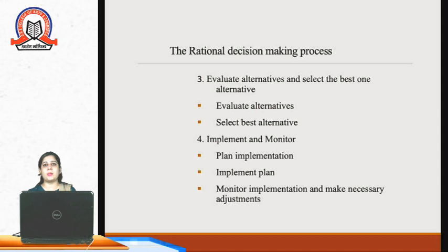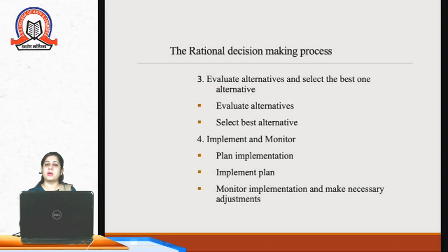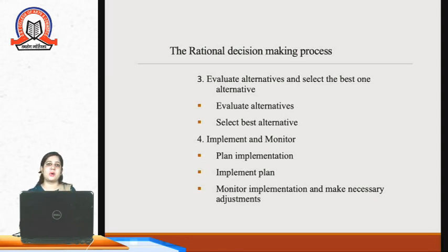The next step is evaluating those alternatives based on statistical or mathematical models and methods, arriving at the best alternative that fits the organizational profit margin. This evaluation is based on PESTEL analysis — political, economical, social, technological, and legal factors — as well as SWOT analysis: strengths, weaknesses, opportunities, and threats. After all these analyses, we select the best alternative to achieve the organization's goals and objectives, then implement and monitor whether specific changes or necessary arrangements are needed.